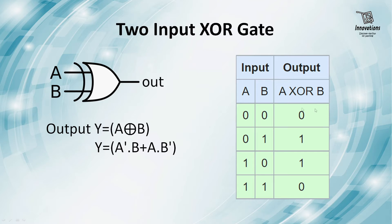The truth table for a 2-input XOR gate: input A=0, B=0, output 0; input A=0, B=1, output 1; input A=1, B=0, output 1; input A=1, B=1, output 0. As per the definition, when an odd number of inputs are 1 the output is 1, and when both inputs are 0 or both are 1 the output is 0.